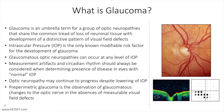The optic nerve cupping is an expansion of the internal optic nerve head void that occurs secondary to the loss of ganglion cell axons that leave the eye through the opening in the sclera in the back of the eye. You can see this here. The axons travel into the area of the nerve in a characteristic pattern, curving into the area of the optic nerve.